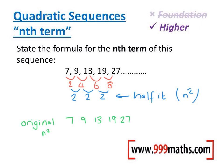So the first term will be 1 squared, which is 1. The second term will be 2 squared, which is 4. 3 squared is 9, 4 squared is 16, 5 squared is 25. It's really important you do it this way round, writing the original sequence first and then the n squared.